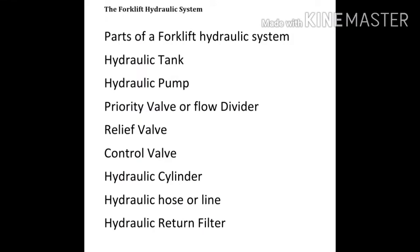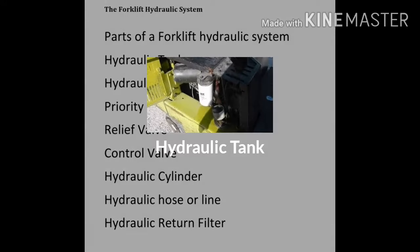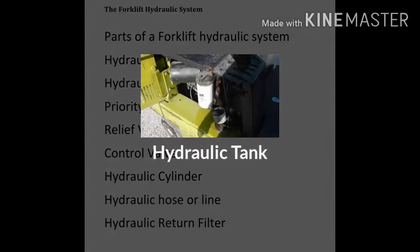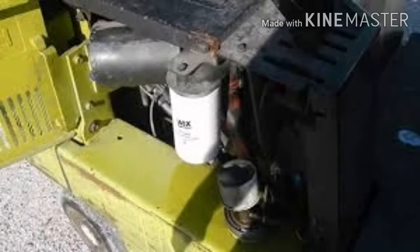The parts of a forklift hydraulic system include: hydraulic tank, hydraulic pump, priority valve or flow divider, relief valve, control valve, hydraulic cylinder, hydraulic hose or line, hydraulic return filter, and hydraulic tank.